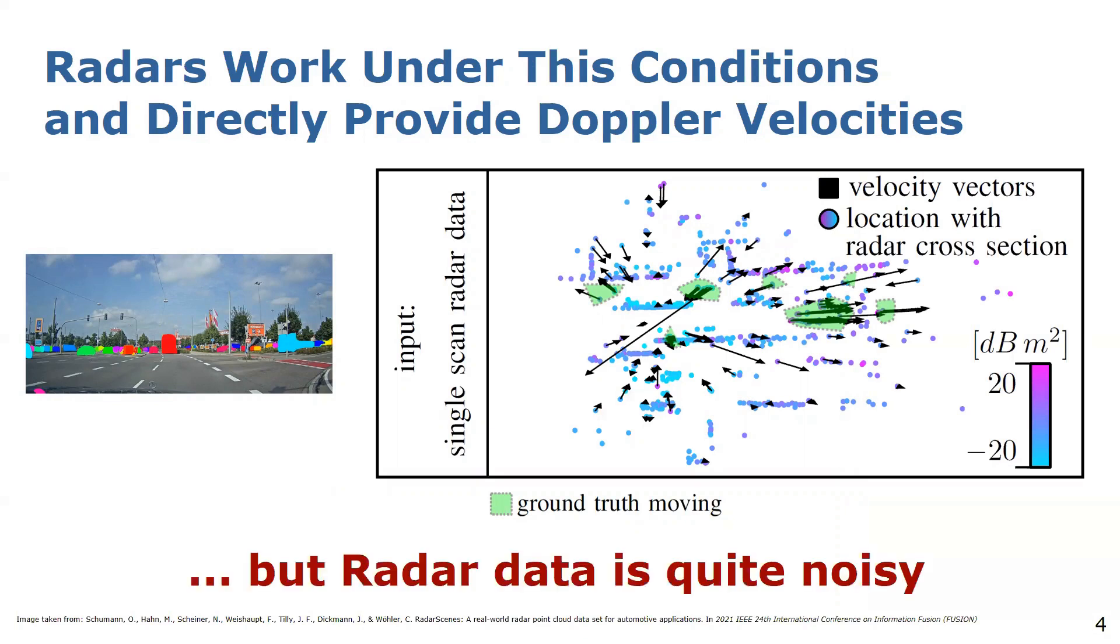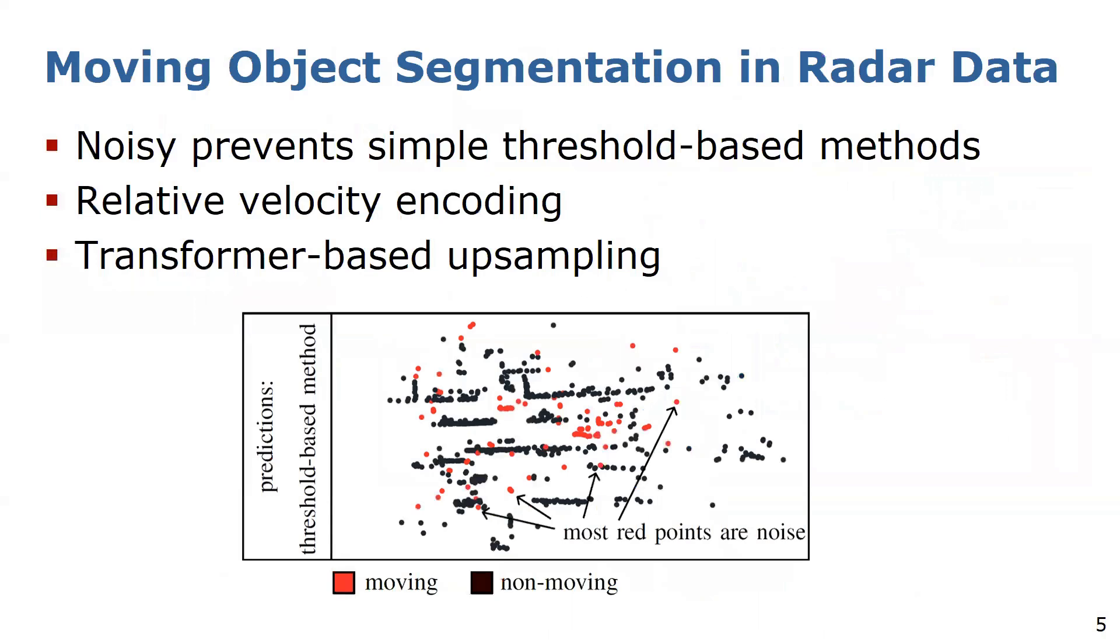A serious drawback however is that the radar scans are largely affected by noise due to multipath propagation and sensor noise. As indicated by all the measurements which has a Doppler velocity vector besides the actual instances. The noisy measurements frequently lead to false positives and make a threshold-based moving object segmentation unsuitable.